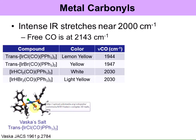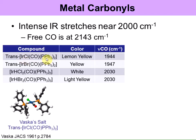For these complexes, the CO is at 1944–1947 wave numbers. The oxidation state of the iridium is +1 here: the phosphine ligand is neutral, the CO ligand is neutral, and the chloride is −1, so the oxidation state of the iridium is +1. Now notice when we go to the other two compounds at the bottom.